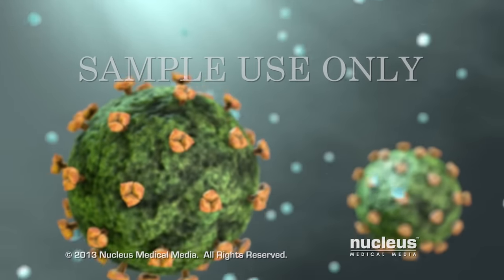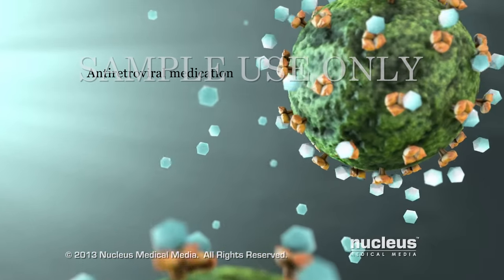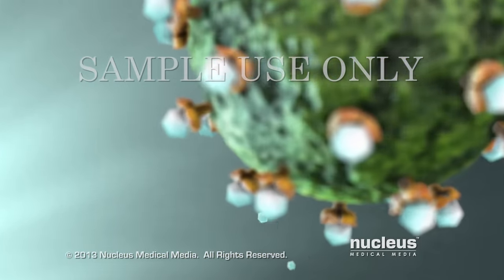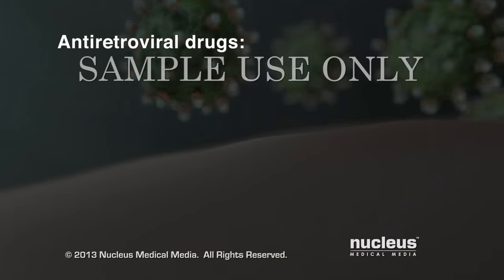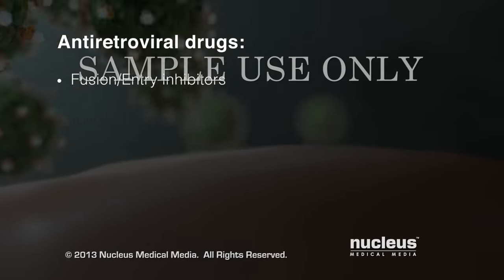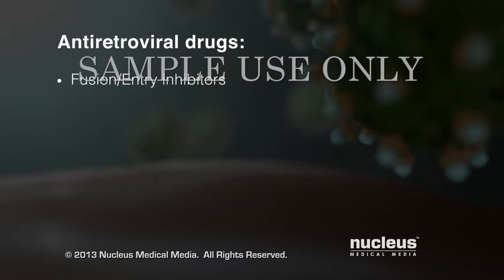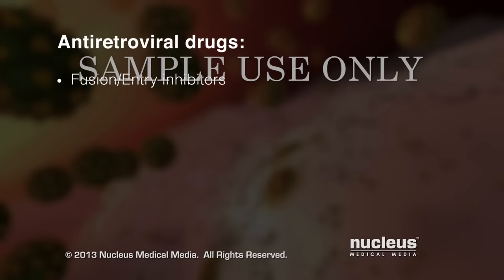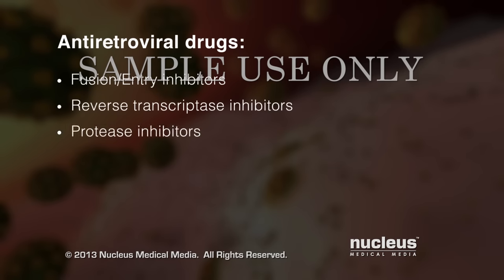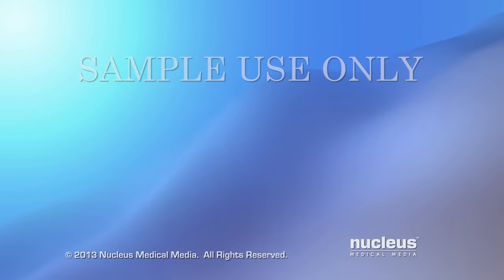Although there is no cure for HIV, drugs called antiretroviral medications can reduce the amount of HIV in your body. One class of antiretroviral medication, called entry or fusion inhibitors, disrupts the HIV infection process by preventing the virus from attaching to your cells. Other classes include reverse transcriptase inhibitors, protease inhibitors, and integrase inhibitors. These drugs prevent the creation, assembly, and spread of new viruses.